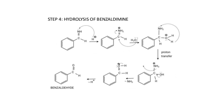Step 4 is the hydrolysis of benzaldeimine. Hydrolysis means breaking in the presence of water — 'lysis' means to break and 'hydro' means water. This was benzaldeimine. Here we have an H plus system, because HCN and HCl were present along with AlCl3, making it acidic. So there will be H plus in the system.